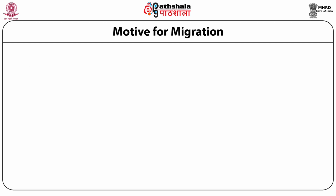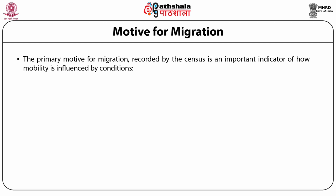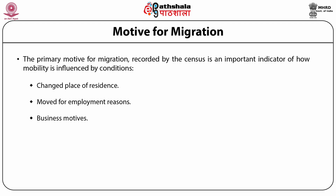Motive for migration: the primary motive for migration recorded by the census is an important indicator of how mobility is influenced by conditions. The first is change of place of residence; second, movement for employment reasons; and thirdly, business motives.